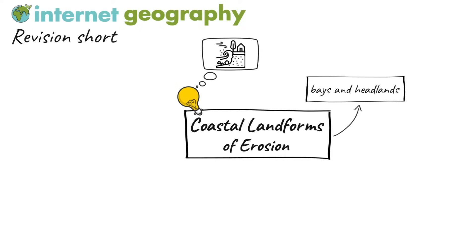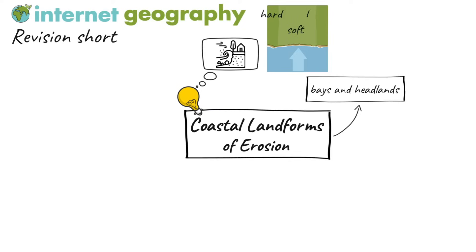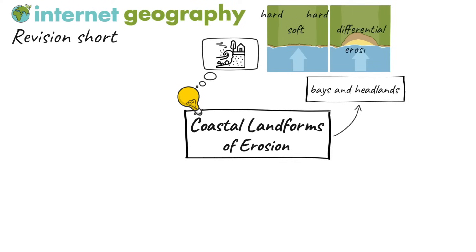The headland is a cliff that sticks out into the sea and is surrounded by water on three sides. Headlands are formed from hard rock that is more resistant to erosion, such as limestone, chalk and granite. Headlands form along discordant coastlines where the rock type alternates between more resistant and less resistant rock at right angles to the coastline. Due to the different geology, erosion occurs at different rates. This is known as differential erosion.